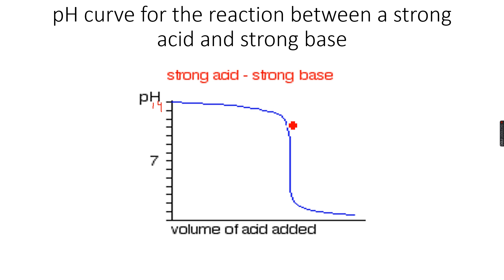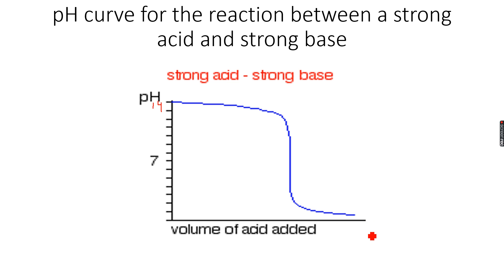The pH will still remain high, but when the amount of acid is suddenly equal to the amount of base — or stoichiometrically it has reacted completely with the base, meaning all of the base has been used up — we get a sudden vertical dip. This sudden vertical dip occurs because neutralization has taken place and the acid has neutralized the base. If we keep adding acid beyond this point, the pH will decrease to a very low value because it's a strong acid with no base to neutralize it. This vertical line is called the equivalence point.